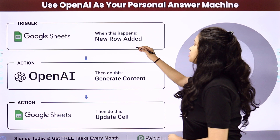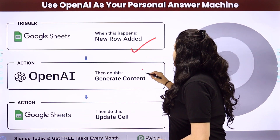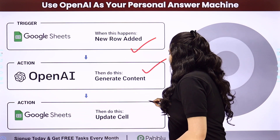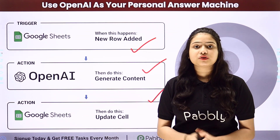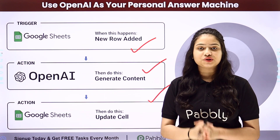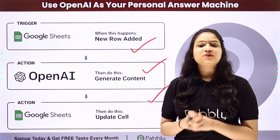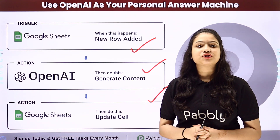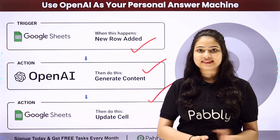We have Google Sheets in our trigger, and then we have OpenAI and Google Sheets once again in our action. We are going to connect all of them using Pabbly Connect in order to automate this entire process. To learn this step by step, let me take you all to my screen.